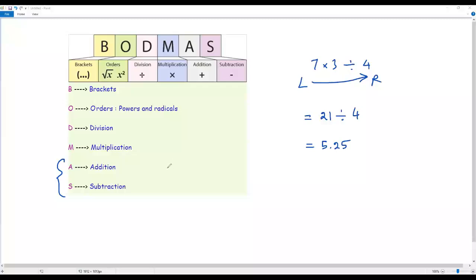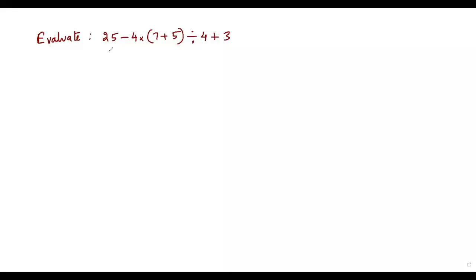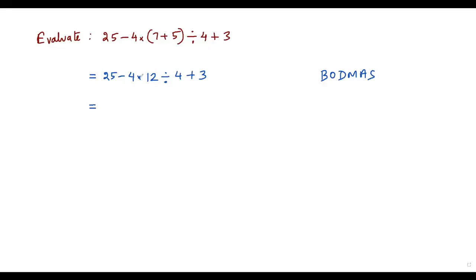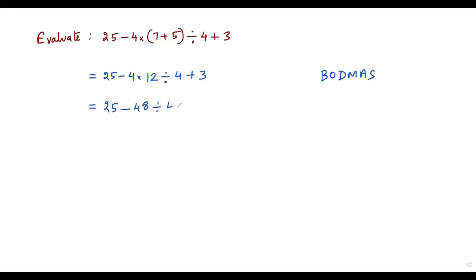Let's look at some examples. We have a numerical expression to evaluate using BODMAS rule. First, B — brackets. Inside the bracket we have 7 plus 5, which equals 12. So we get 25 minus 4 times 12 divided by 4 plus 3. There are no powers or radicals, so next we handle multiplication and division. Looking left to right, multiplication comes first: 4 times 12 is 48.